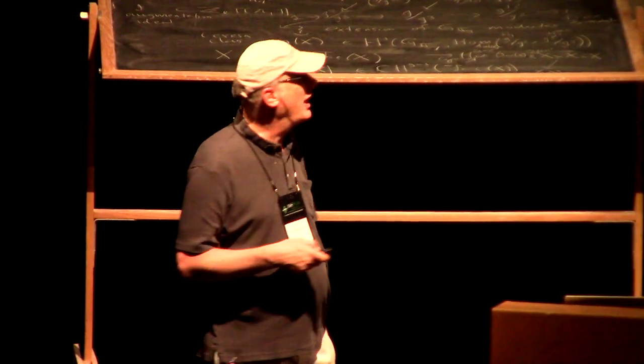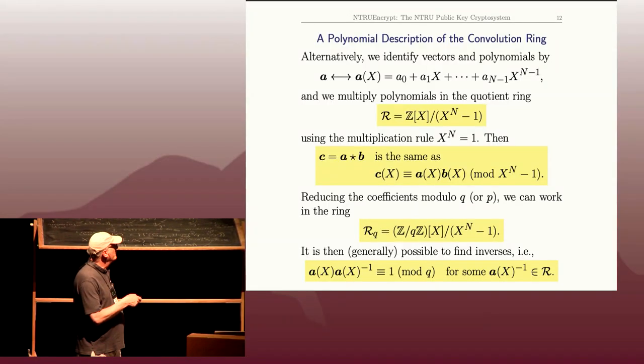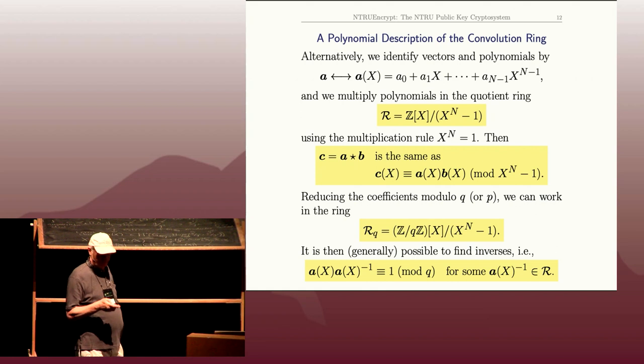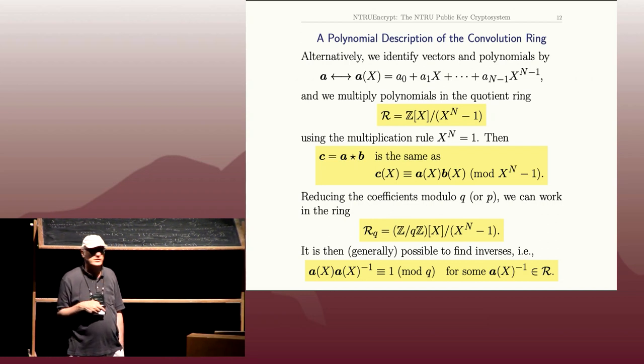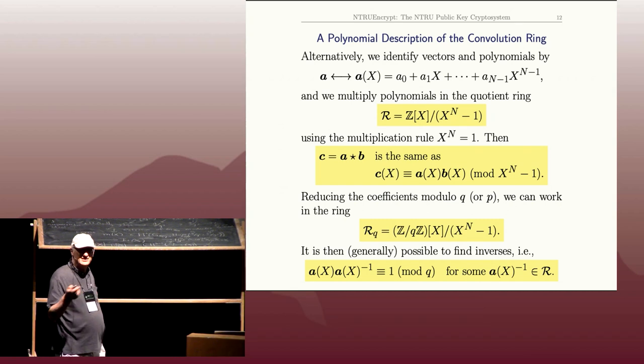We're also going to need to reduce the coefficients mod various primes. This ring R has integer coefficients, or I could take R_Q where coefficients are in Z mod Q, and similarly R_P where coefficients are in Z mod P. In the big ring, most elements do not have inverses—the unit group exists but isn't huge. But if I use mod Q coefficients where Q is prime, most elements will have inverses. It's a nice exercise to figure out how big the unit group is. Roughly, if you take a polynomial a(X) in here, as long as a(1) doesn't equal 1, it's very likely to have an inverse.